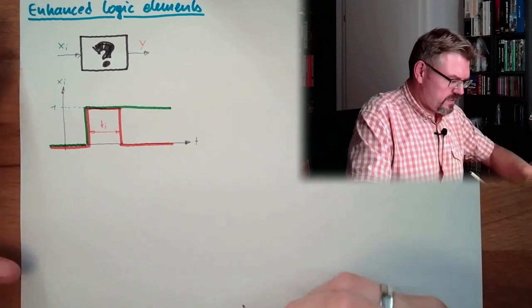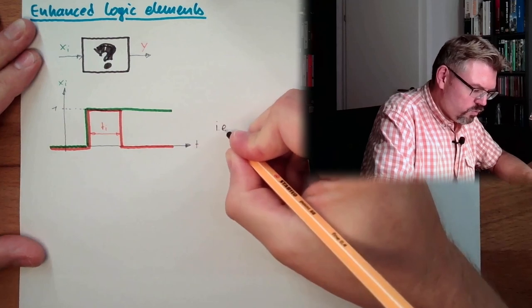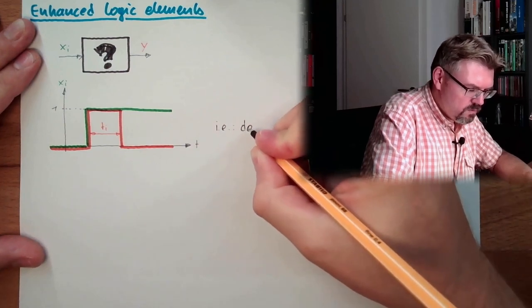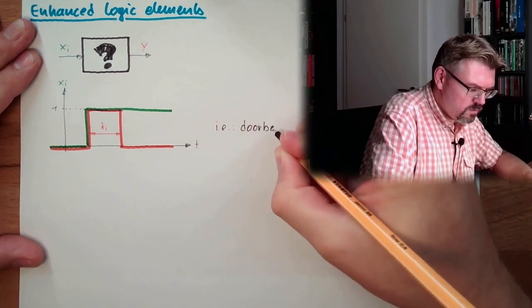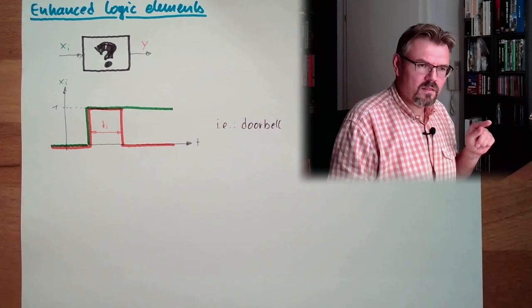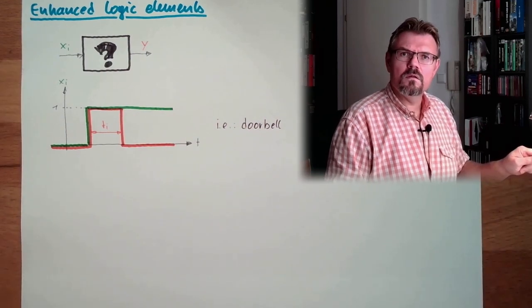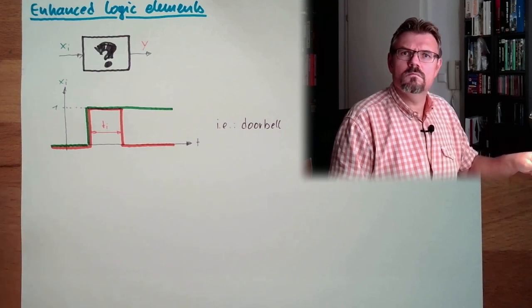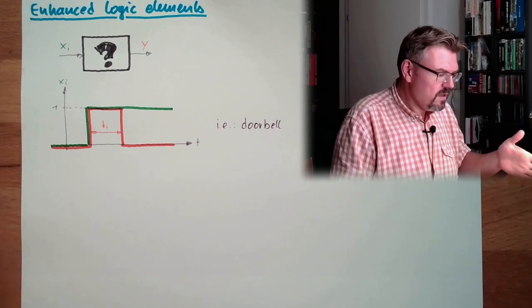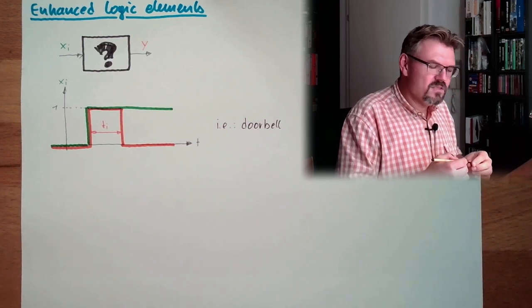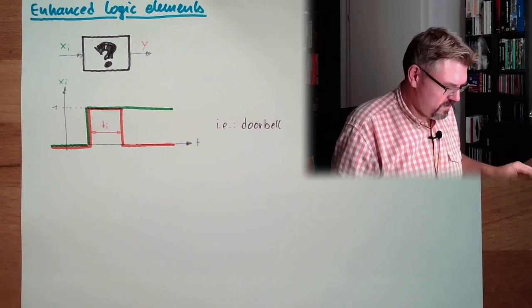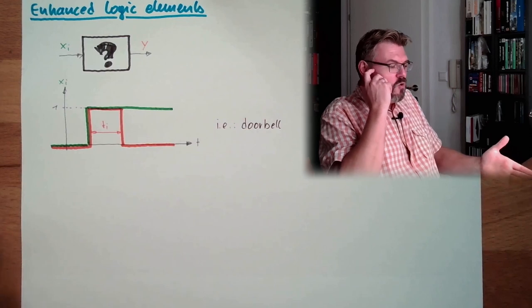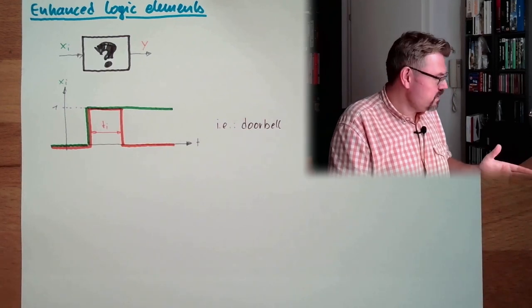So one steady input is producing only one impulse at the output. What would be a proper example? This would be a doorbell. I press the button, ding, then it's gone. I can stay on the button. So the doorbell is not that annoying anymore. So this would be one possibility.